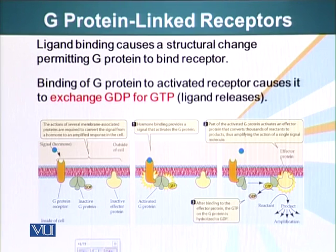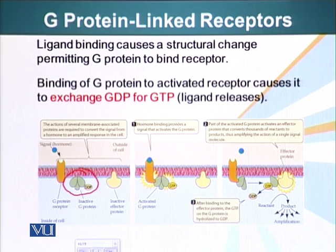Helices 5 and 6 come closer, the structure of the C3 loop changes, and a protein present in the cytoplasm - attached to the inner surface of the plasma membrane through a specific hydrophobic molecule - once the receptor is activated, this G-protein binds the receptor.